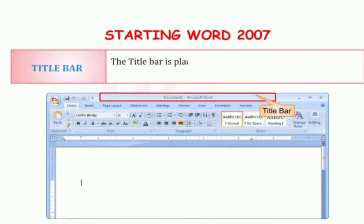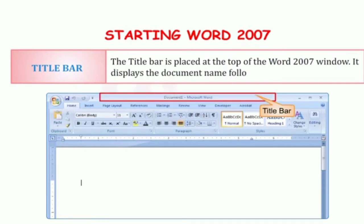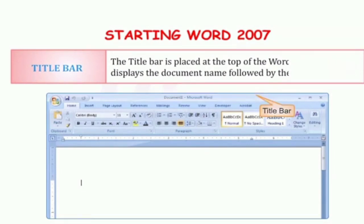The first component is the title bar. The title bar is placed at the top of the Word 2007 window. It displays the document name followed by the program name. सबसे ऊपर जो आपको दिख रहा है, blue color का बार, उसको हम बोलते हैं title bar. इसमें हमारे Microsoft Word का name और हमने जो document बनाया, उसका name हमें यहाँ पे display होता है.